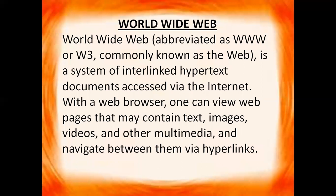Think of it this way: the internet is the network of devices — you can take the internet as a box. And the World Wide Web is the information which is filled in that box. So the World Wide Web is the web of information available on that network. The information is available in the form of web pages and websites.